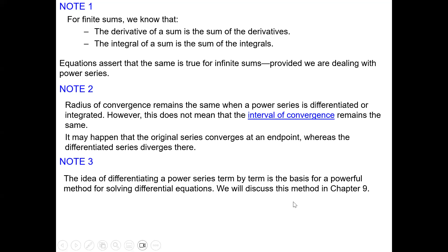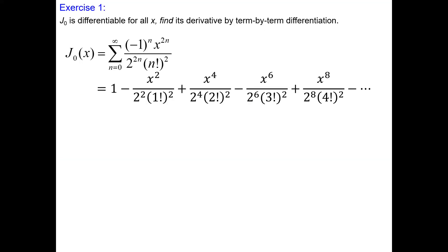Let's solve a couple of examples. We remember the Bessel function J sub 0 — its interval of convergence is all real numbers, so it's differentiable everywhere. I have the expanded form typed. Substituting n equals 0 gives 1; substituting n equals 1 gives a negative term with 2 squared, 1 factorial squared, x squared; substituting n equals 2, 3, 4 gives further terms.